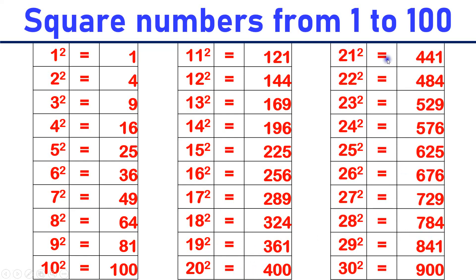21 square is equal to 441. 22 square is equal to 484. 23 square is equal to 529. 24 square is equal to 576. 25 square is equal to 625.